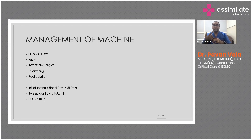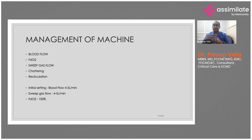Once the patient is established on ECMO, the machine is doing all the gas exchange. It's essential to maintain constant blood flow. If blood flow stops, you get chattering where the pipes move around. This is most commonly because the patient is hypovolemic — starting ECMO causes an inflammatory response as blood contacts an external surface, so most patients require fluid resuscitation. There is also something called recirculation, which we'll discuss later.